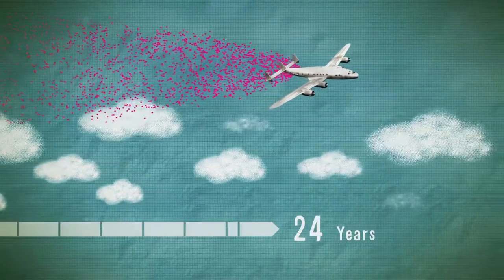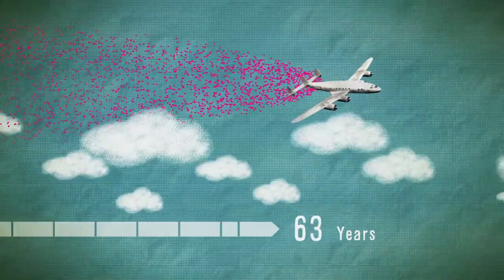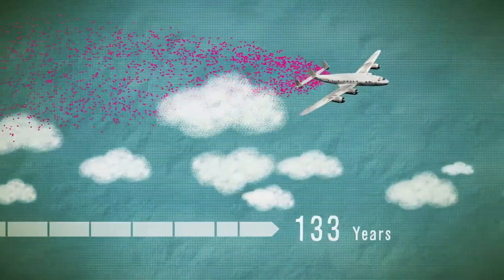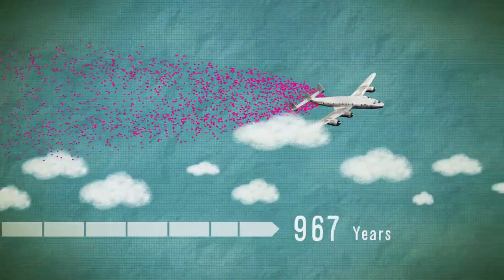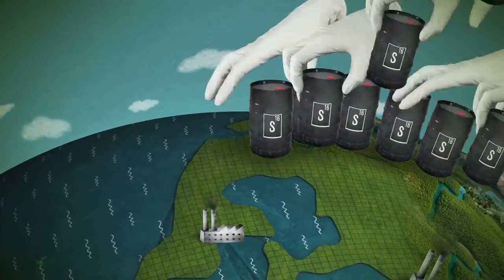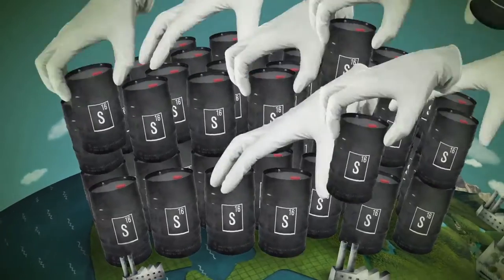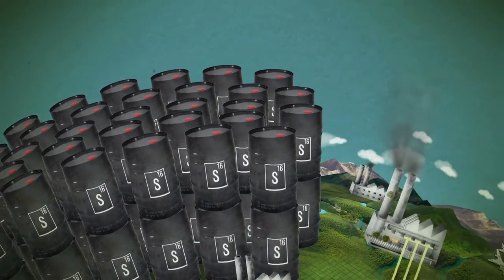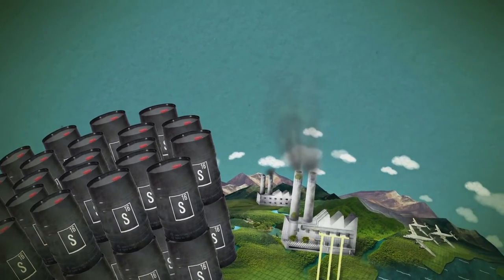To prevent a termination shock, the particles would have to be distributed continuously over decades, centuries or even millennia. Not only would this require many millions of tons of sulfur, it would also make humanity dependent on the functioning of a large-scale technological manipulation of the climate.